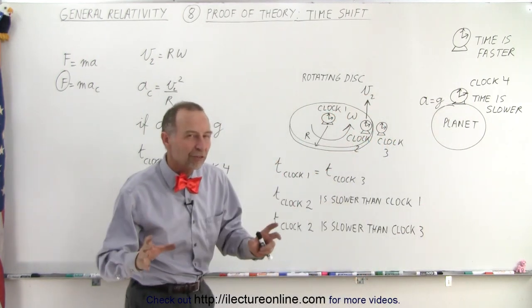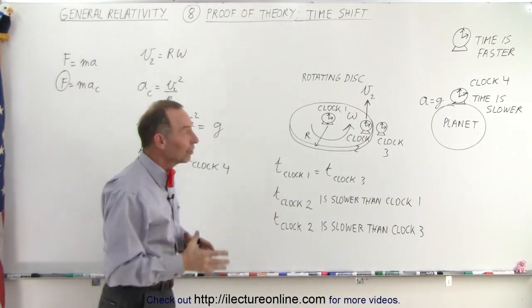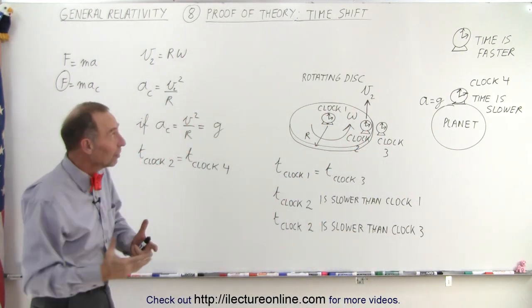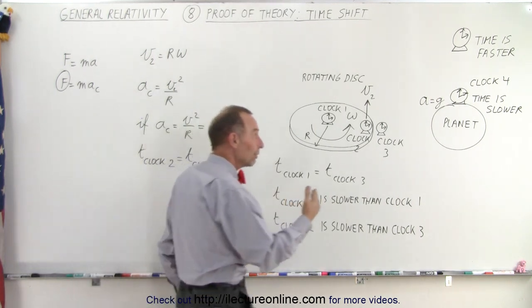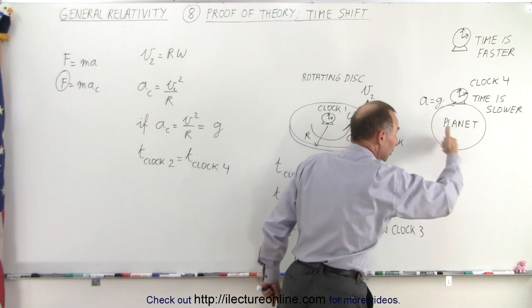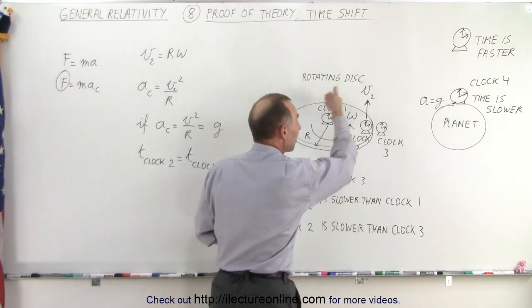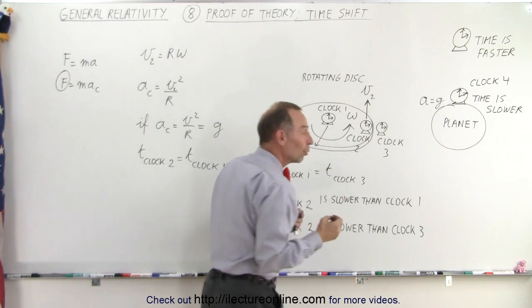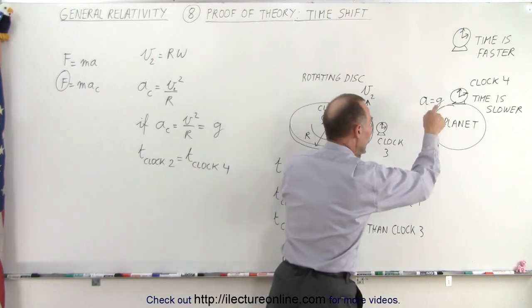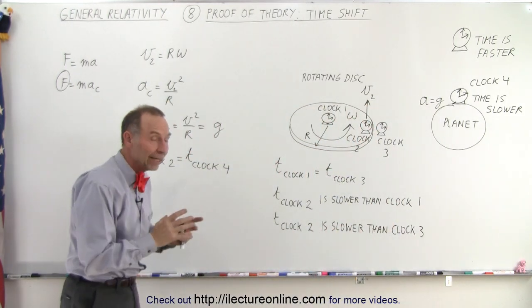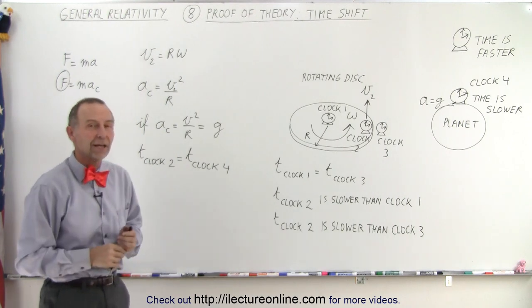There is no difference in the time between these two clocks, and that is the amazing result, again, of the principle of equivalence and the time shift caused by a gravitational force, be it a real gravitational force in space due to the presence of planet, which causes space to warp, or the artificial gravity created by a fast rotating disk. The result is exactly the same, and the clocks cannot tell the difference. That's an amazing result, again, of the principle of equivalence and the effect of gravity on time.